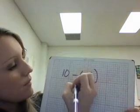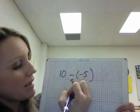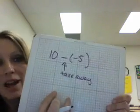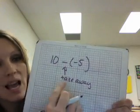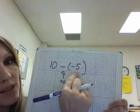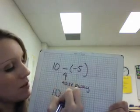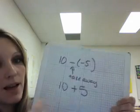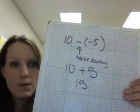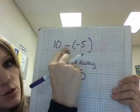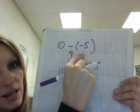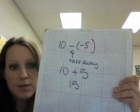Okay, so 10 minus negative 5. What I'm going to do is I'm going to take away. Remember with subtraction that subtraction is the opposite. So I'm going to take away the negative 5 or I'm going to do the opposite of negative 5. So that would be plus 5 and 10 plus 5 is 15. So you want to remember when you have minus minus you're taking away the negative or you're taking the opposite of the negative which would be positive.